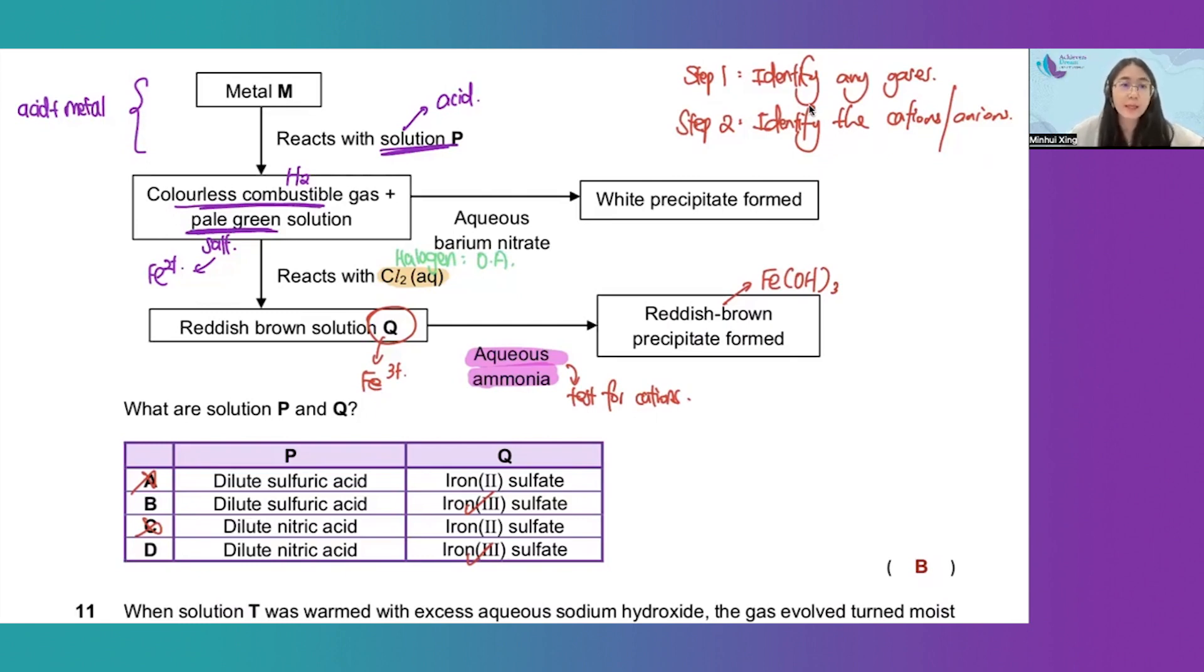Cl2 is oxidizing the Fe2+ aqueous solution to Fe3+ aqueous solution. This confirms that the reddish brown solution is Fe3+.